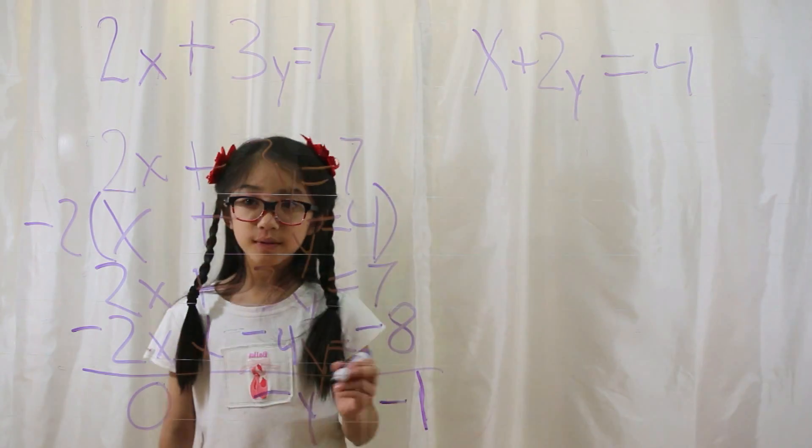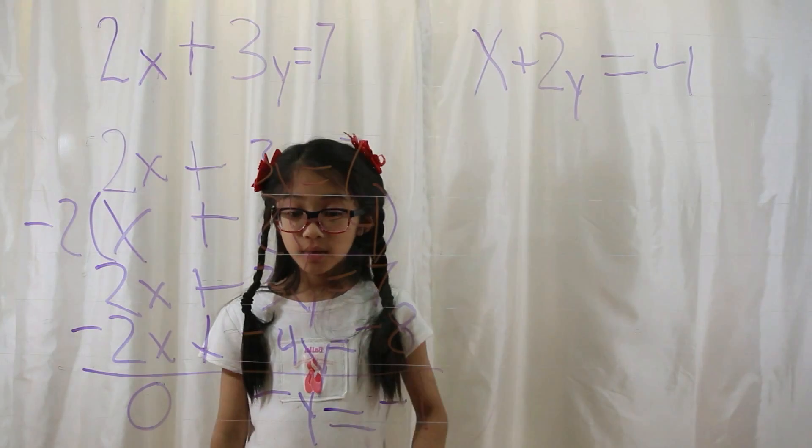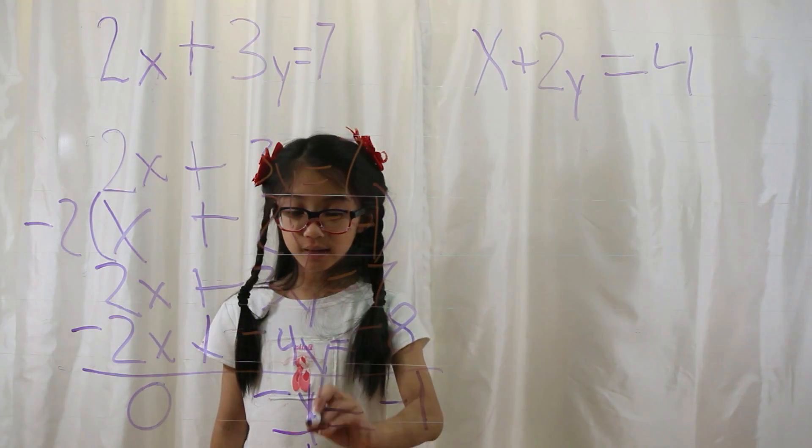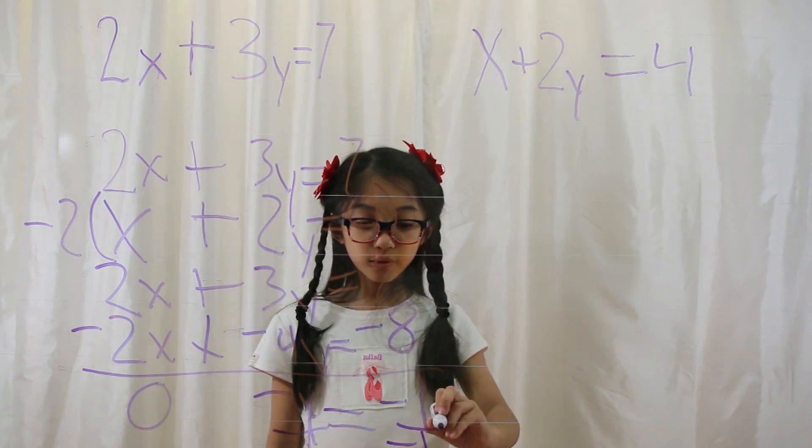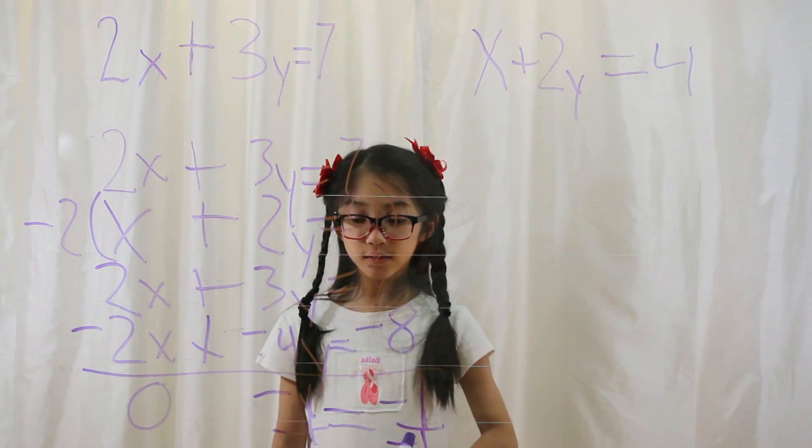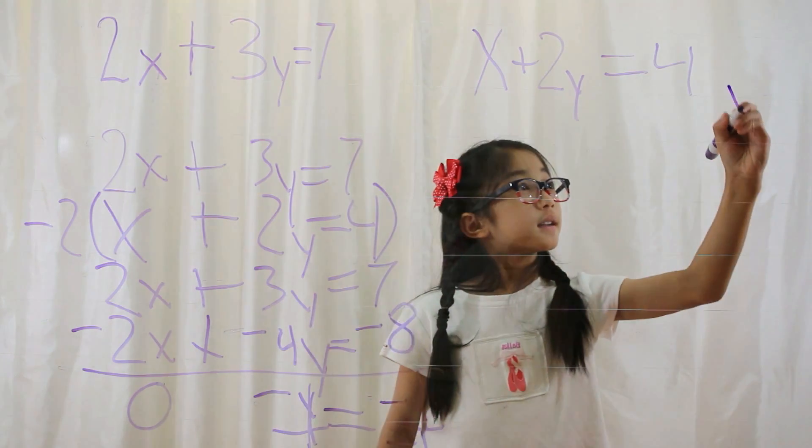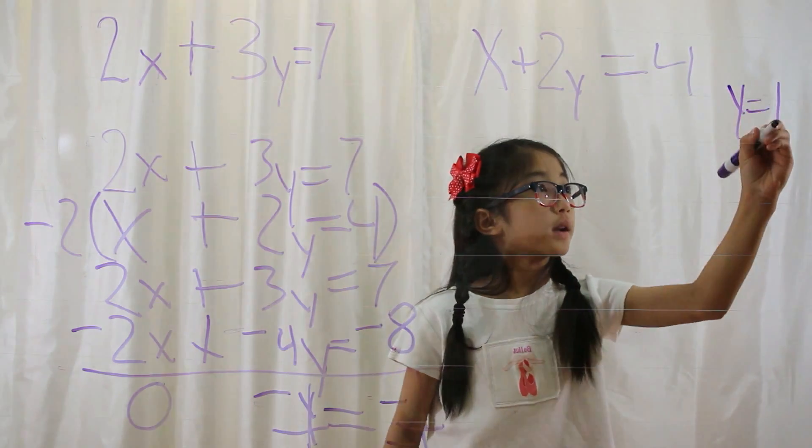So now you divide. You divide it by negative 1 on both sides, so that cancels. And negative 1 over negative 1 cancels also. Therefore, y equals 1.